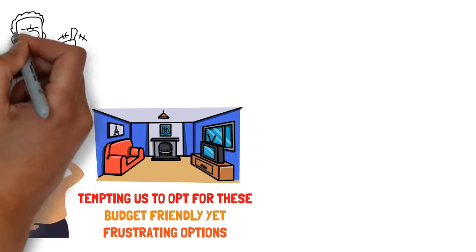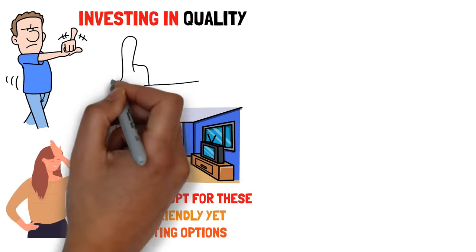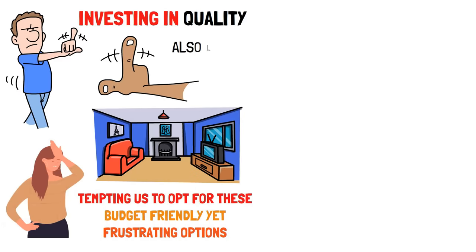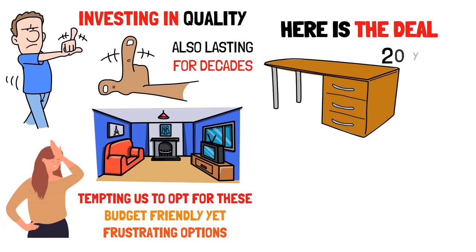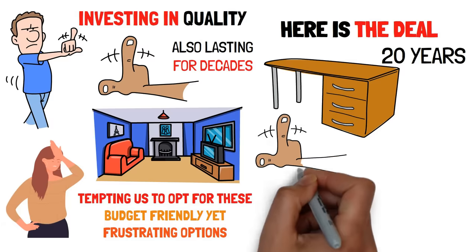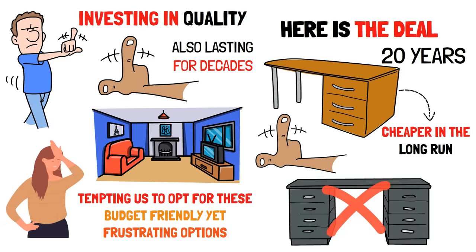However, the wealthy don't play this game of furniture roulette. They take a different route, investing in quality that isn't just about surviving assembly, but also about lasting for decades. Here's the deal. Buying a piece of furniture that lasts 20 years isn't just easier on your nerves. It's also cheaper in the long run than purchasing four or five that barely make it through the warranty.